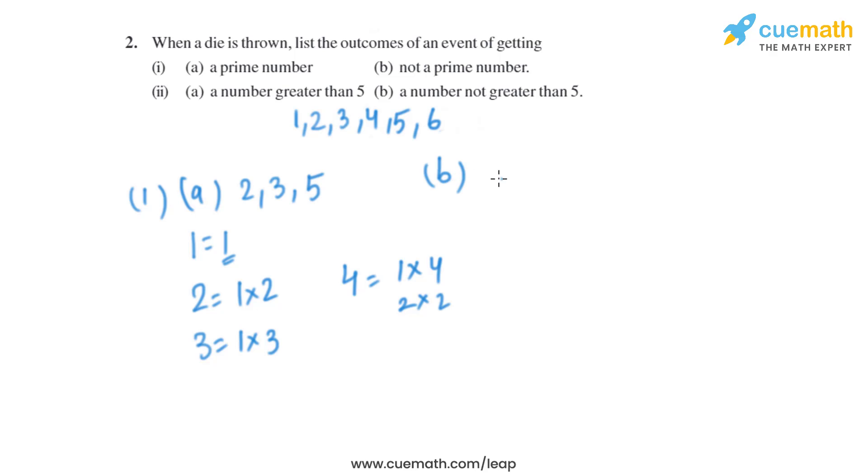Part (b) says not a prime number. So one is not a prime number, four is not a prime number, and six is not a prime number. Now let's move on to part (c). It says a number greater than five.